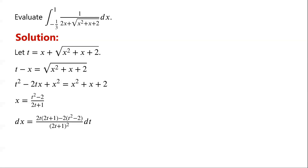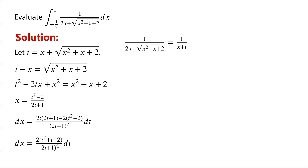Simplifying the numerator, dx equals 2(t squared plus 2 plus 2) over (2t plus 1), dt. The integral equals 1 over (x plus t). Substituting x equals (t squared minus 2) over (2t plus 1), we can write this as 1 over [(t squared minus 2)/(2t plus 1) plus t].